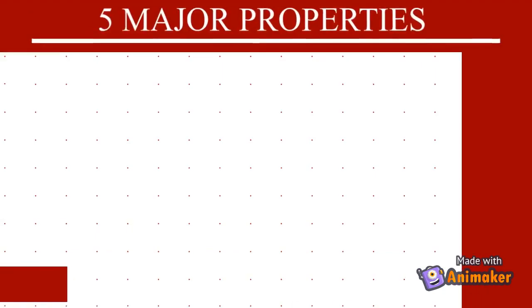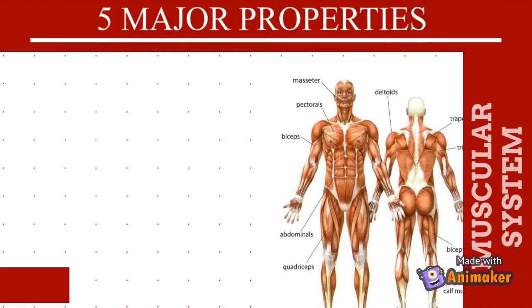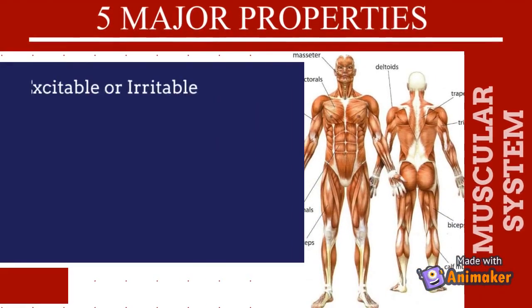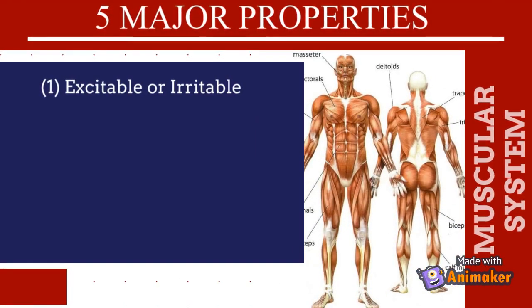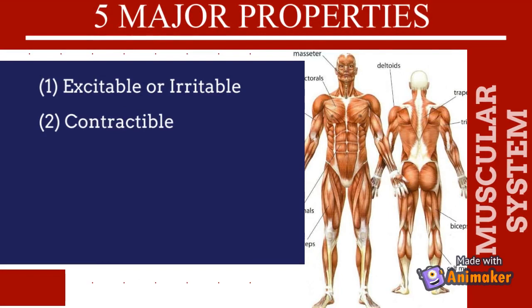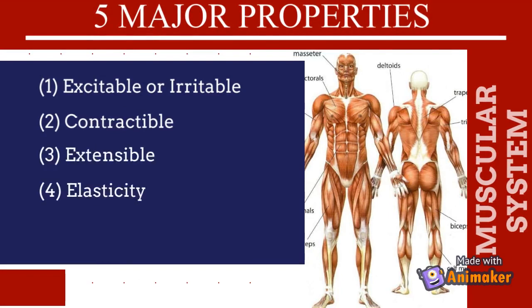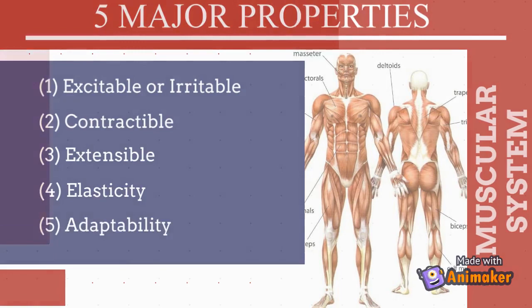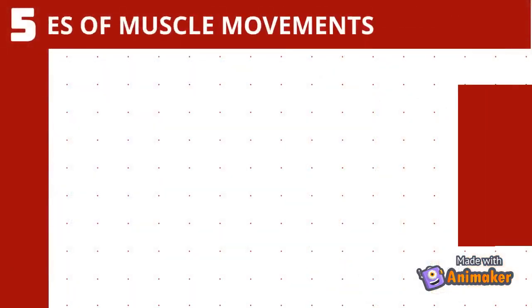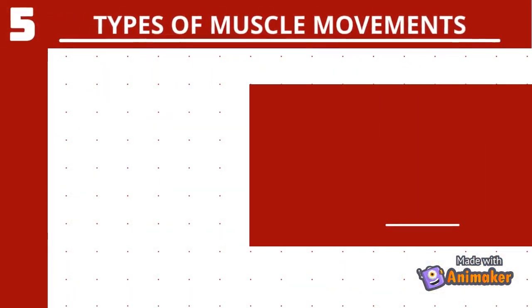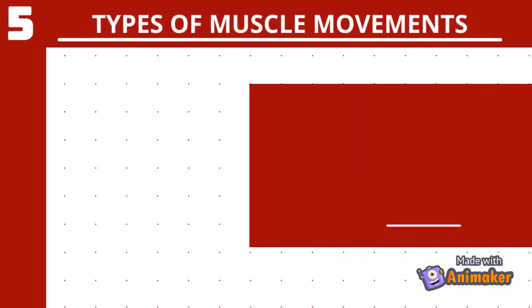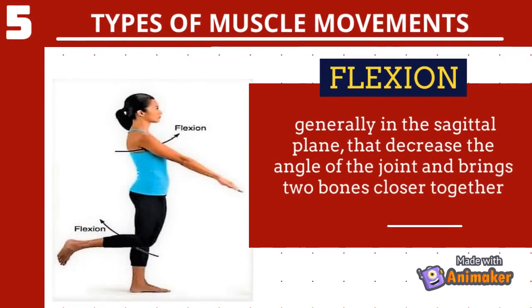The five major properties of the muscular system are: excitable or irritable, contractible, extensible, elastic, and adaptability.